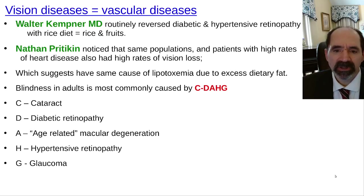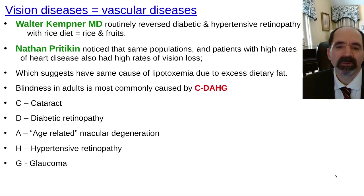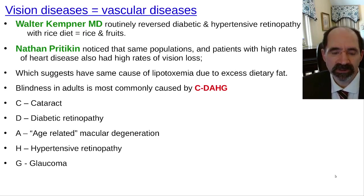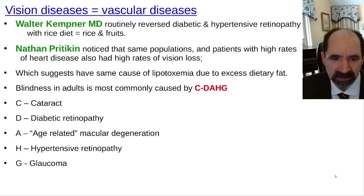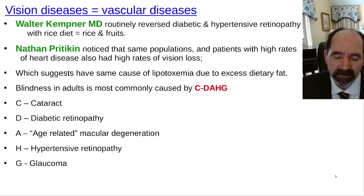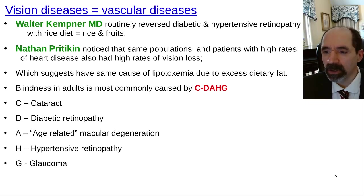Blindness in adults is most commonly caused by what I use as a mnemonic: SEA DOG. Those are the most common causes of blindness. First, cataract — cataracts can happen for multiple reasons but are especially associated with a high-fat diet. Then diabetic retinopathy, age-related macular degeneration, hypertensive retinopathy, and glaucoma.